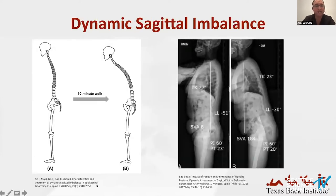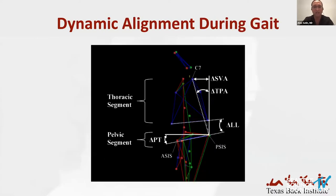In recent years, the concept of dynamic sagittal imbalance has been described. This refers to the worsening of spinal balance that occurs following the gradual exhaustion of compensatory mechanisms, and the dynamic process underscores the limits of conventional radiographs. While some authors have looked at this after a 10-minute walking test, more recent work has focused on defining dynamic ranges of spinal alignment during gait using three-dimensional motion tracking. In a recent study at the TBI gait lab, dynamic alignment was evaluated by linking radiographic alignment to kinematic alignment during standing and gait.